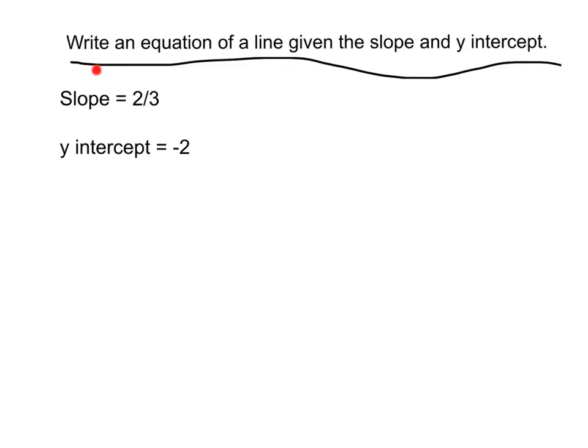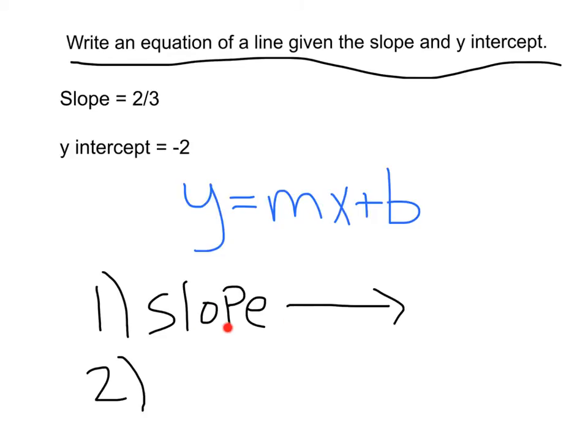Here's our first example. We want to write an equation of a line given the slope and the y intercept. Here they're telling us the slope is two thirds and the y intercept is negative two. Since we're writing an equation of a line, we want to go back to our bread and butter, y equals mx plus b. Now remember those two things we want to find. First is our slope. We know our slope is equal to two thirds.